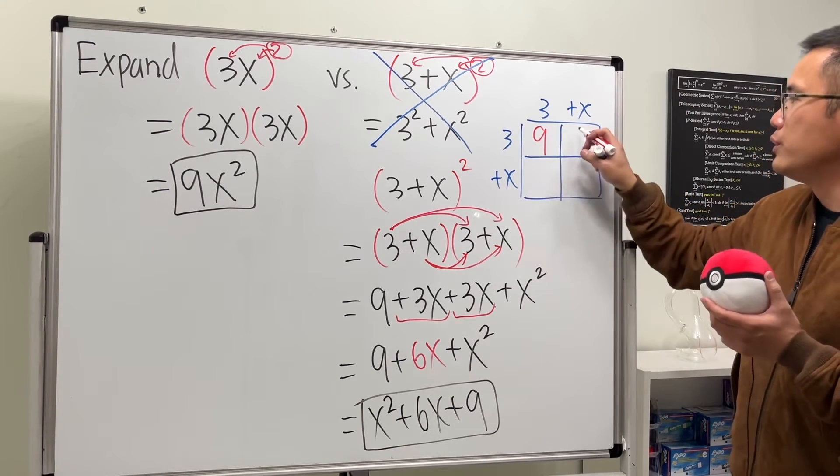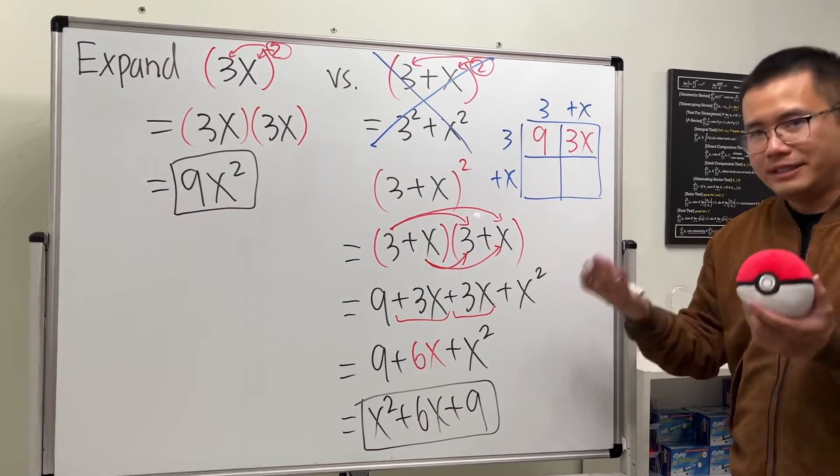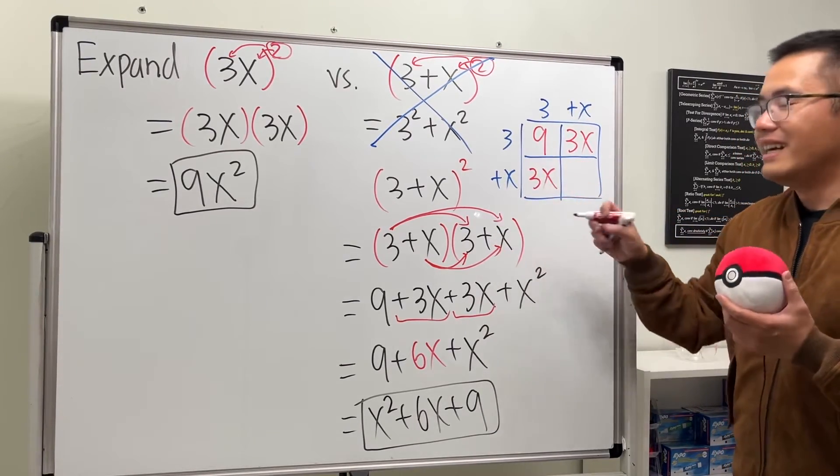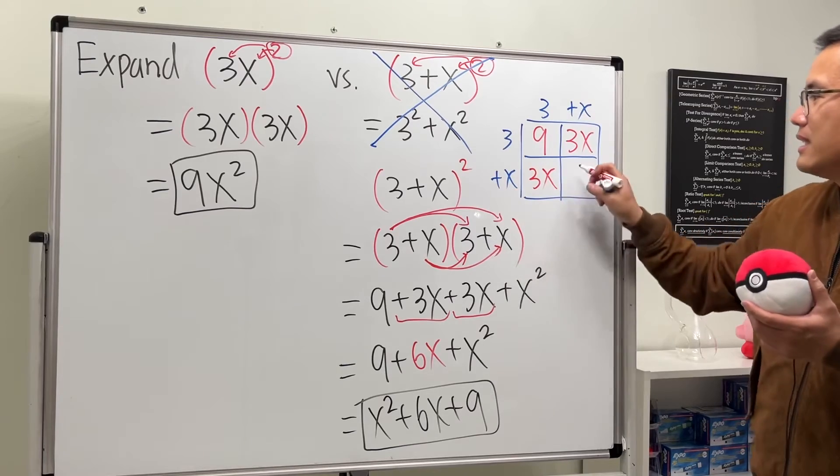Next, to fill in this box, we do x times 3, which is 3x. Next, to fill in this box, we do 3 times x, which is 3x. And lastly, x times x gives us x².